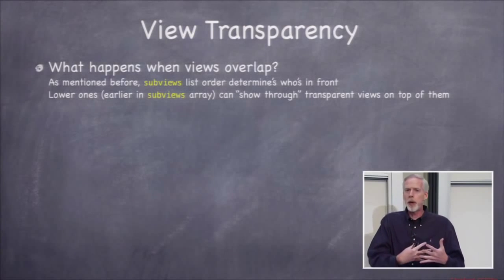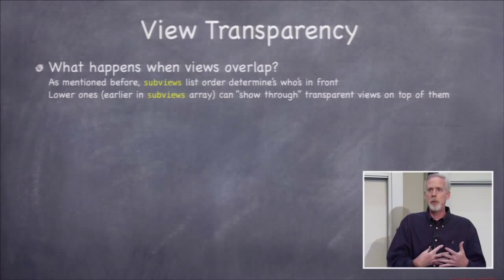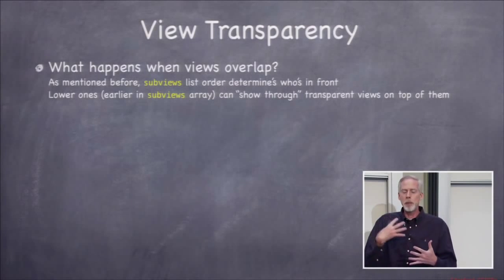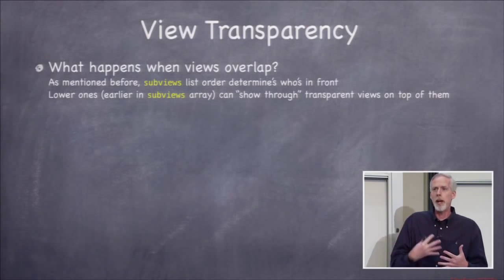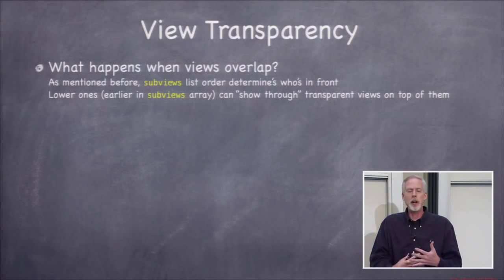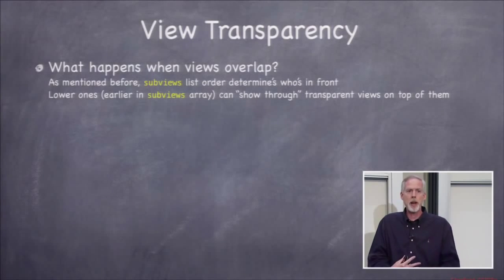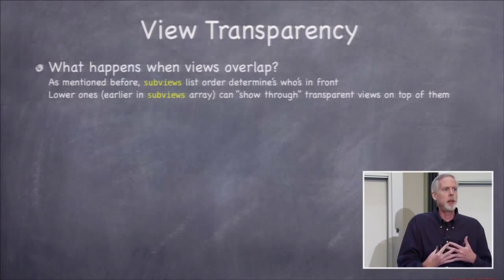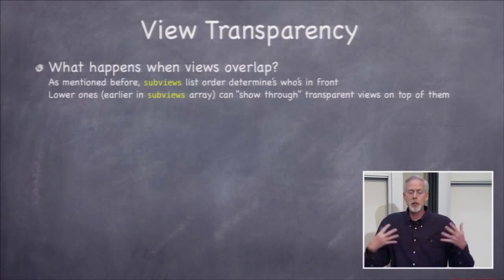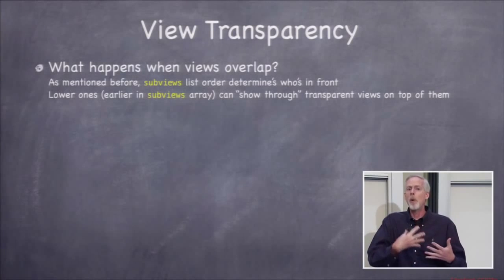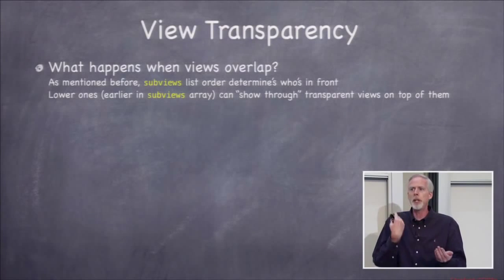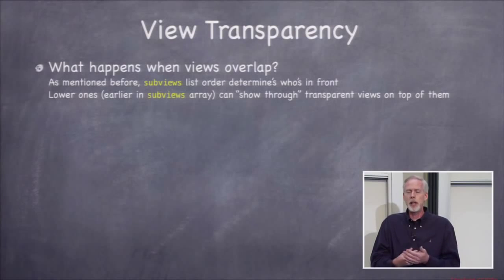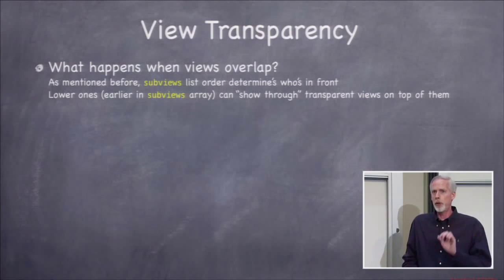Having transparent views is not cheap. When it comes to performance optimization, one of the biggest mistakes is premature optimization — but this matters. If you have a lot of transparency, it's a performance hit because compositing views on top of each other with alpha is far more expensive than just blasting bits. So be careful when setting opaque to NO.